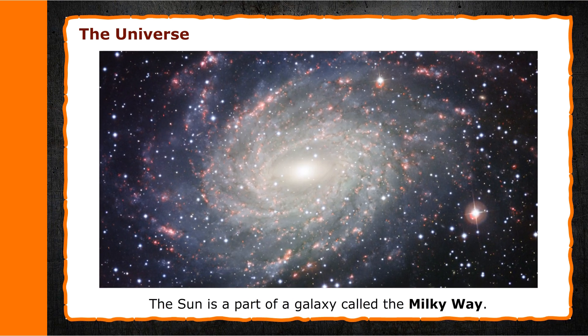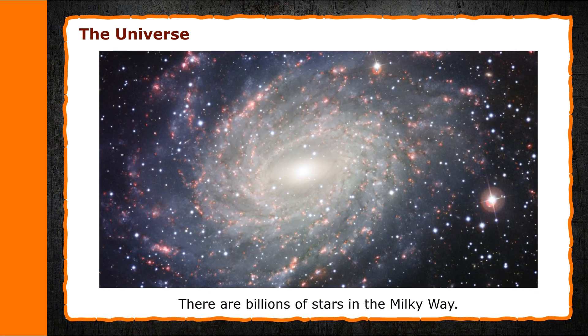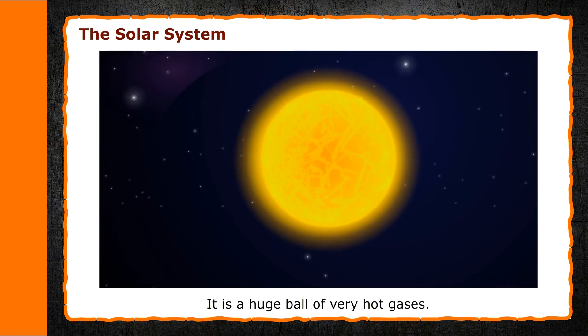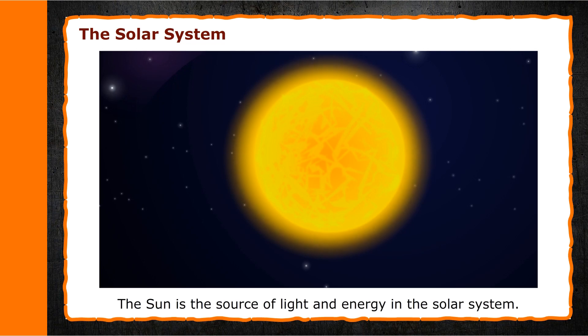The Solar System. As you know, the Sun is a star. It is a huge ball of very hot gases. The Sun is the source of light and energy in the solar system. This has made life possible on Earth.